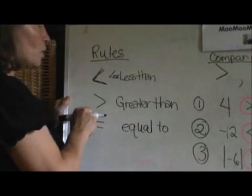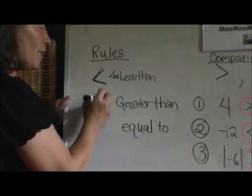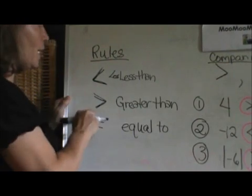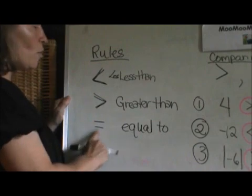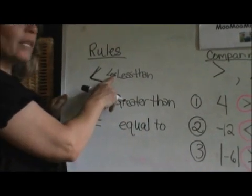The symbol switched around is greater than. And notice it does not look like an L. It is a backwards L. So it can't be less than. And of course equal to. Now those are the symbols and that is the way I remember the less than symbol.